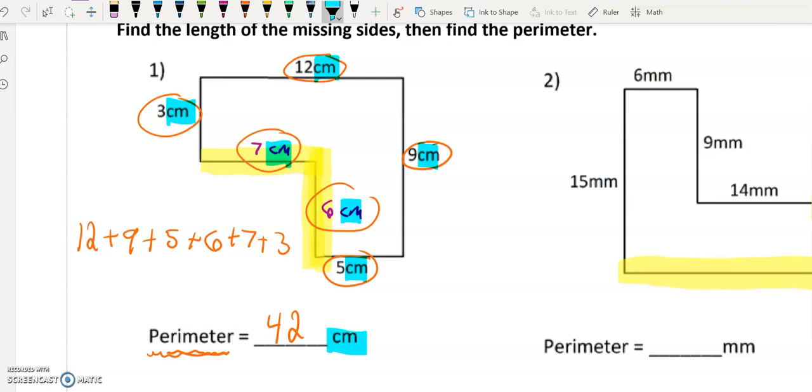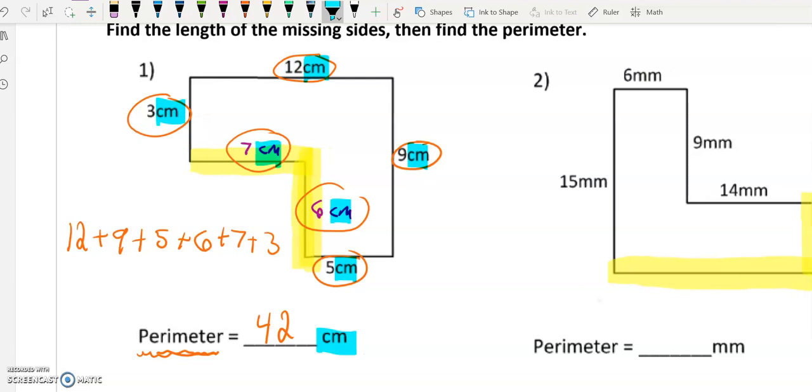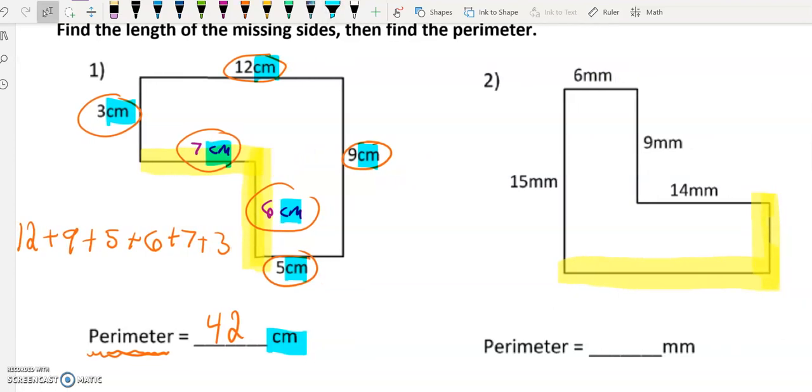If one measurement is not in centimeters, you cannot do this process. You would have to convert it to centimeters. And then once everything is in centimeters, then you could add them together. So in order to find perimeter, all of the units do have to be the same. So always just do a kind of quick check for that and make sure that they are all the same and then you are good to proceed.